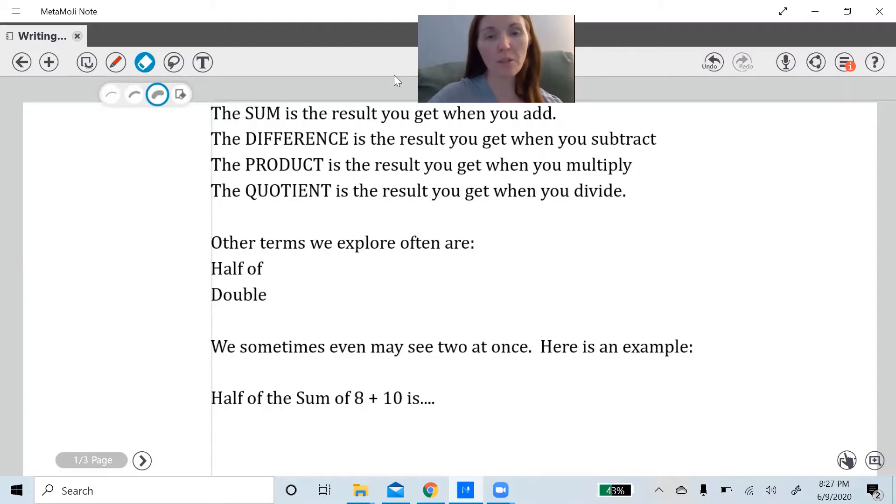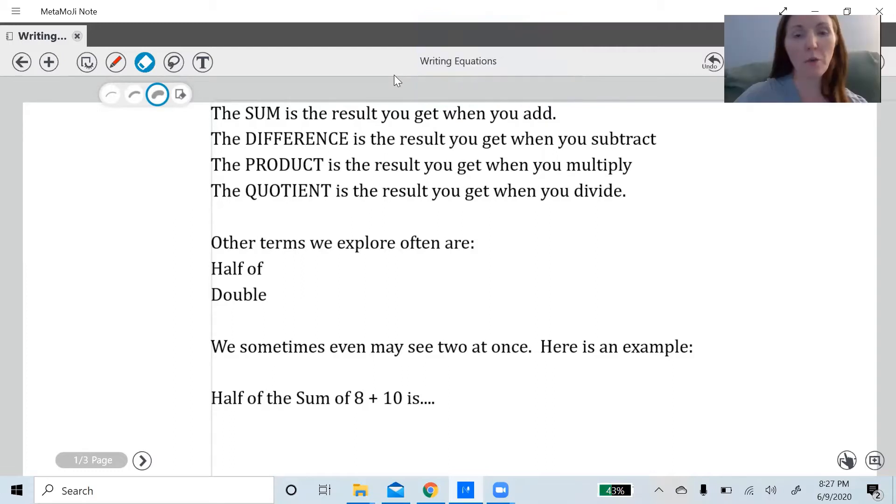When you look at this, we know that the sum is the result you get when you add, the difference is the result you get when you subtract, the product is the result you get when you multiply, and the quotient is the result you get when you divide.